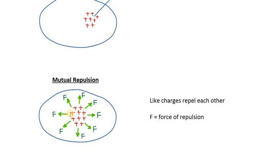As you can see, a large amount of positive charge is present inside the conductor, so each of them will repel each other because like charges repel each other. Due to the mutual repulsion, they will exert force of repulsion on each other, as shown here as F.